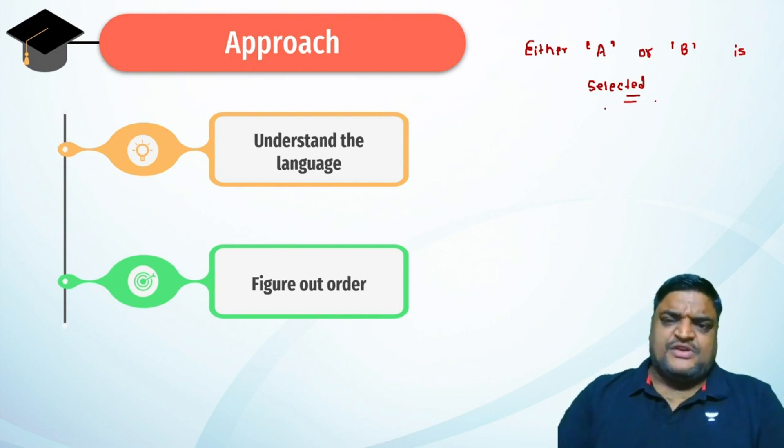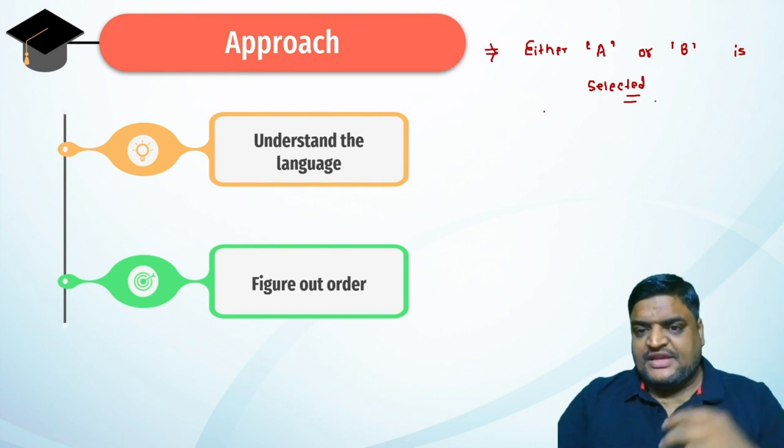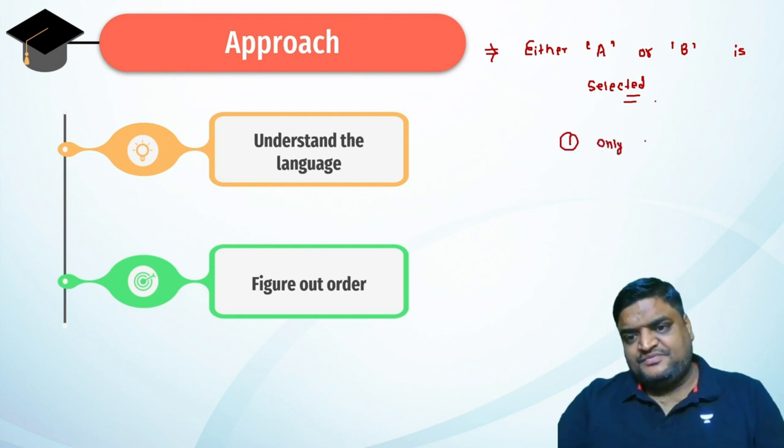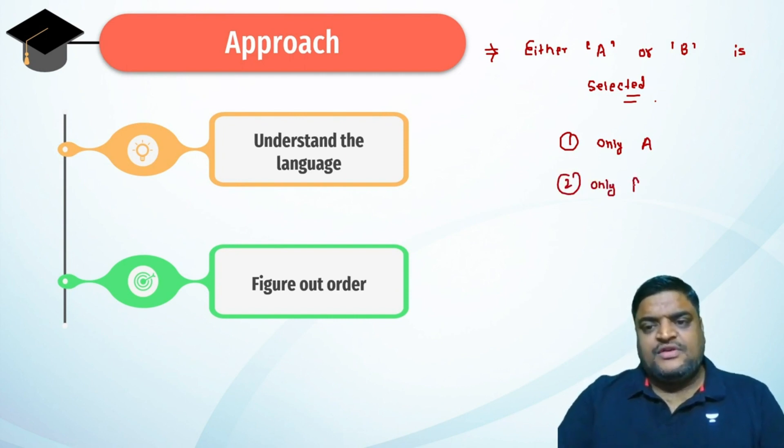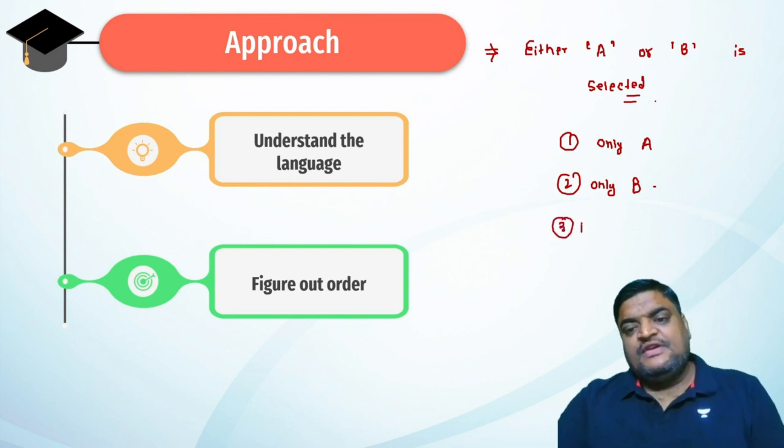If I ask you how many cases are possible for this statement, most of you will think of two possible cases: only A is selected, and only B is selected. But actually there is a third possibility where both A and B can be selected.